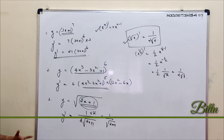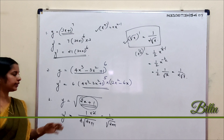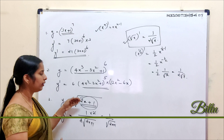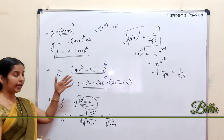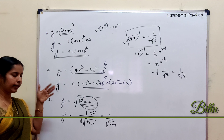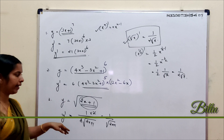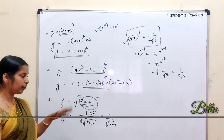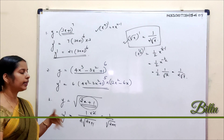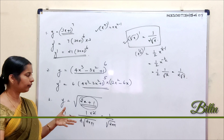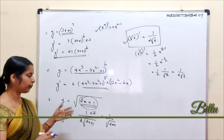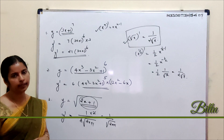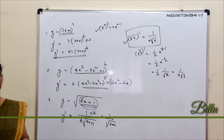The chain rule is essentially: identify the outer function using standard results, apply the standard result for that outer function, and then multiply by the derivative of the inside function.